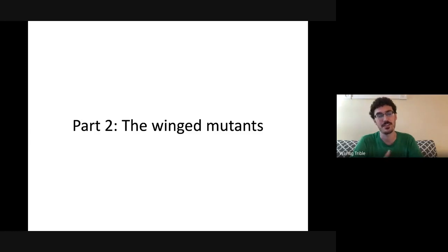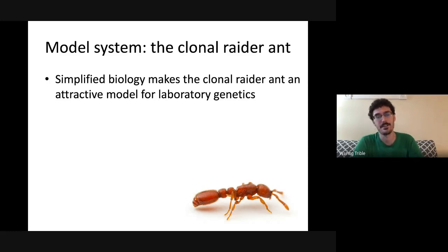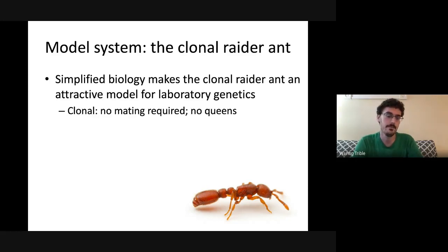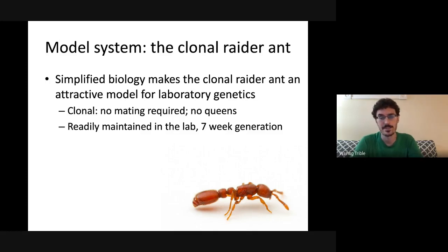This leads into part two: the winged mutants. The model system is the clonal raider ant, which has simplified biology enabling highly replicated laboratory genetics experiments. As the name implies, this is a clonal species — no worrying about mating in captivity, and in fact there are no morphological queens. Colonies are composed entirely of morphological workers. The species is very healthy in captivity, robust to many conditions, grows well in the lab, and has a quick generation time of seven weeks from egg to reproductive adult — much shorter than most ant species.